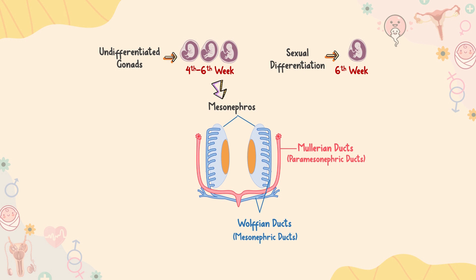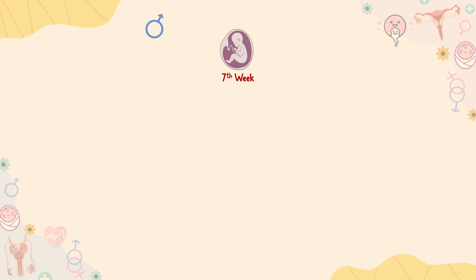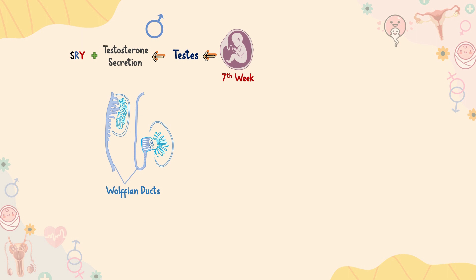Mullerian ducts are also known as paramesonephric ducts, while Wolffian ducts are also known as mesonephric ducts. In males, at about the seventh week of gestation, the testes start secreting testosterone. The presence of the SRY gene and testosterone causes the Wolffian ducts to develop and form male accessory sex organs, including the vas deferens, epididymis, and seminal vesicles, while the Mullerian duct degenerates. The fetal testis also secretes anti-Mullerian hormone, or AMH, which causes the degeneration of Mullerian ducts, and thus prevents the uterus and fallopian tube from developing.